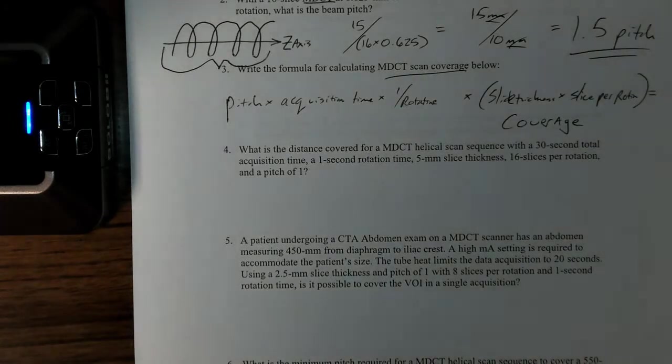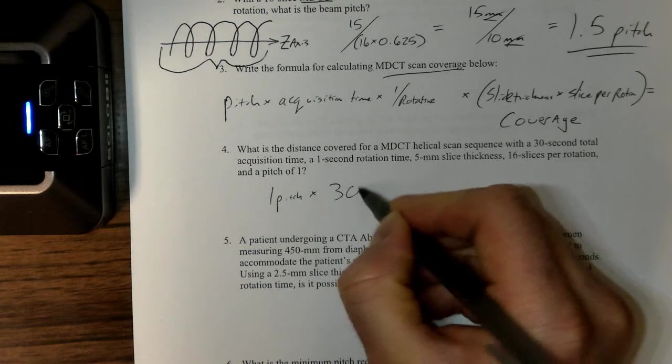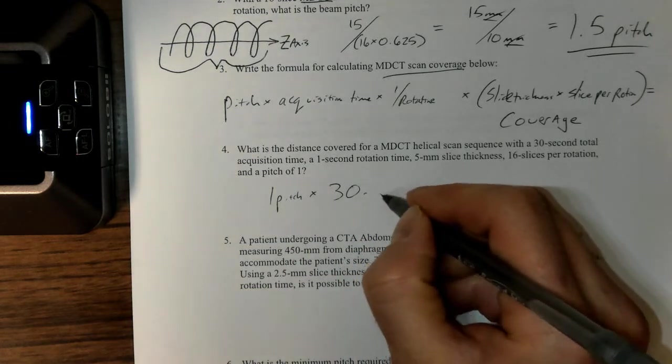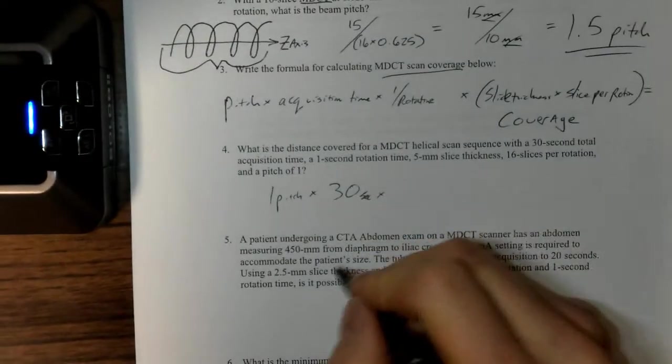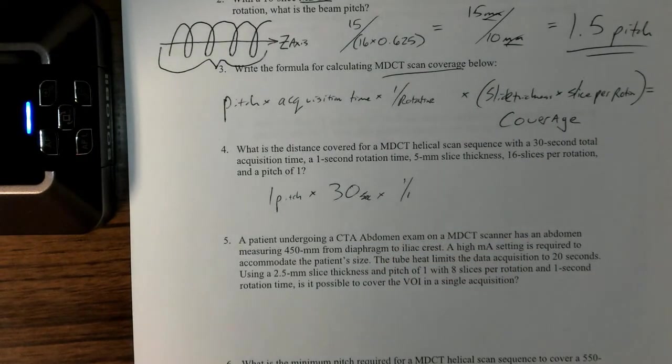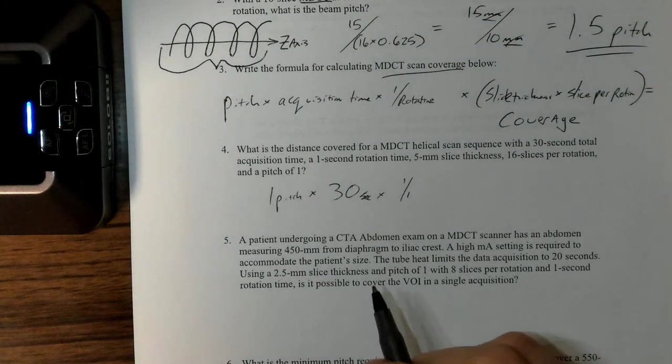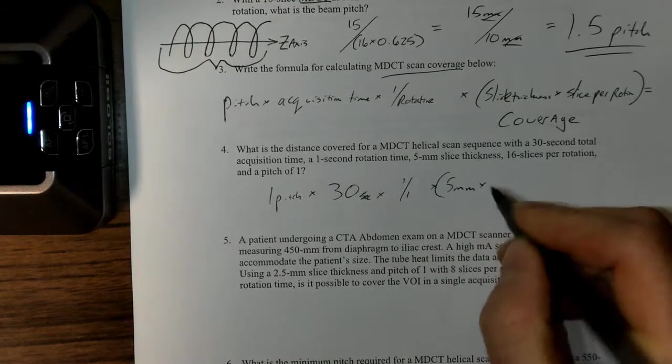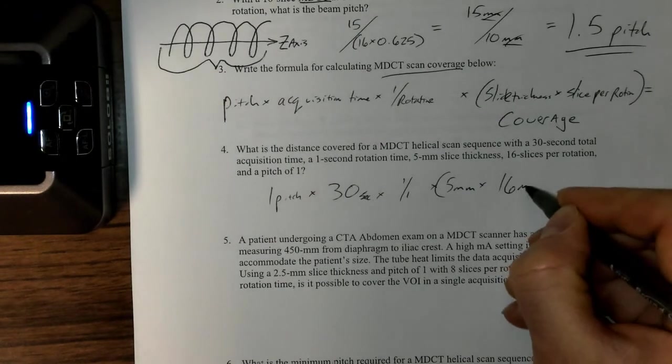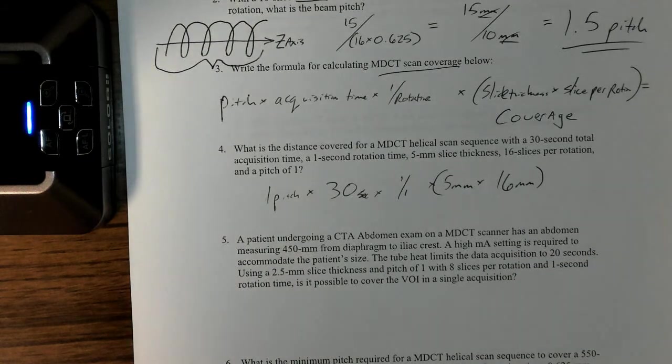It relates directly to how quickly they can administer contrast. If I have a pitch of one, which is a fairly ideal pitch, 30 seconds—that's the total acquisition time—one over one is going to be that relationship between rotation time and the amount of rotation. We're going to have five millimeters times—we'll put these in parentheses—16.